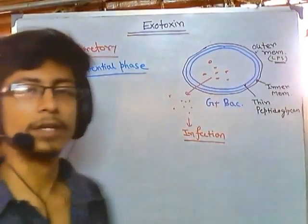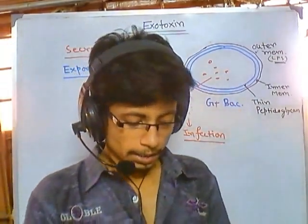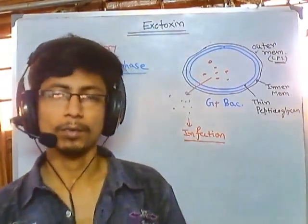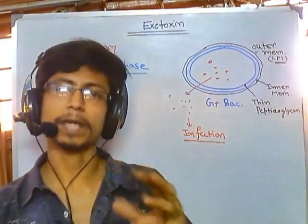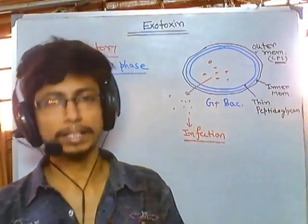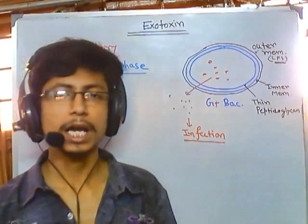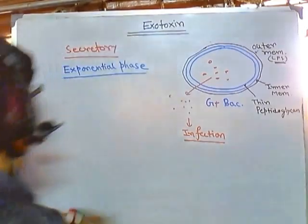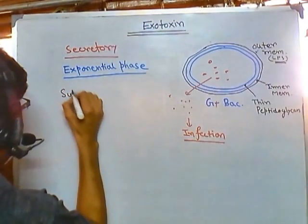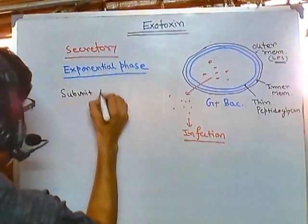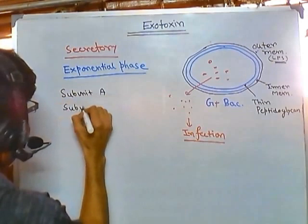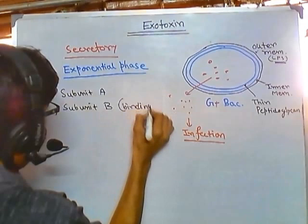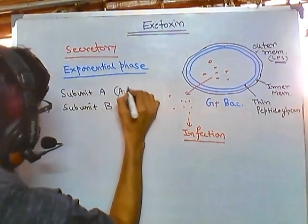Exotoxins are mostly synthesized in two components. One is called the receptor-binding component, or B subunit. The other is called the active component, or A subunit. So exotoxins are made up of two subunits: subunit A and subunit B — B is for binding, and A is for acting.